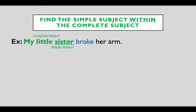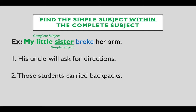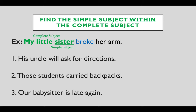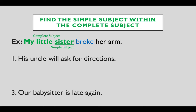A simple subject is the main noun or pronoun in a complete subject. The simple subject in the summer sky is sky. The summer sky is the complete subject. Find the simple subject within the complete subject. Like in the example: my little sister — sister is the simple subject, my little sister is the complete subject — broke her arm. Practice: his uncle will ask for directions; those students carried backpacks; our baby sister is late again. The simple subjects are uncle, students, and sister.